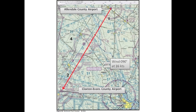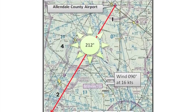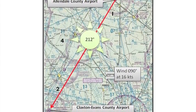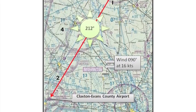Use a plotter to determine true course by plotting a line on the chart between Allendale County Airport and Claxton Evans County Airport. True course is determined to be 212 degrees.